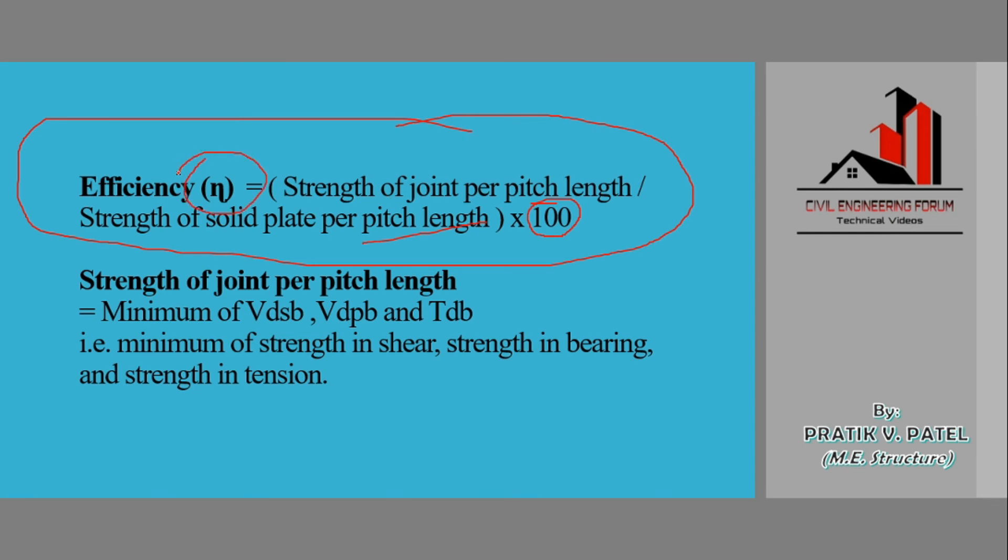We can analyze the efficiency of that particular joint by using this formula. The strength of the joint per pitch length will be equal to minimum of these three what we calculated in our previous lectures: that is, design shear strength of the bolt, design bearing strength of the bolt, and design tensile strength of the bolt.